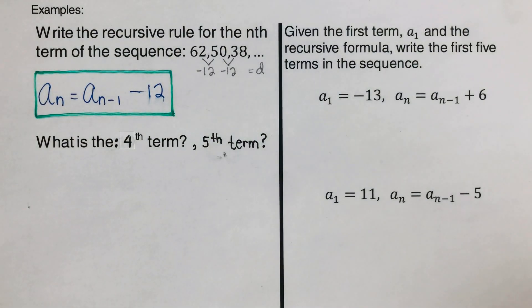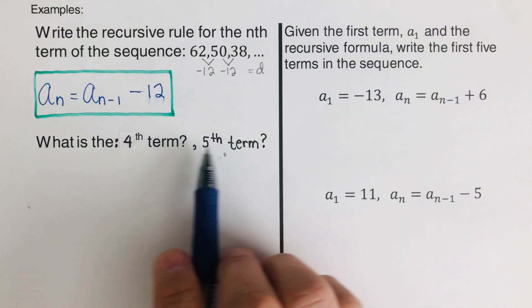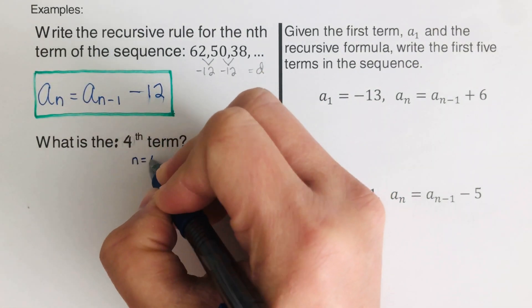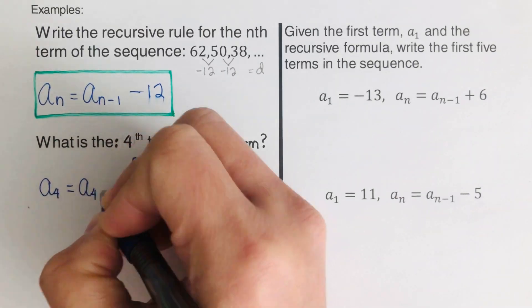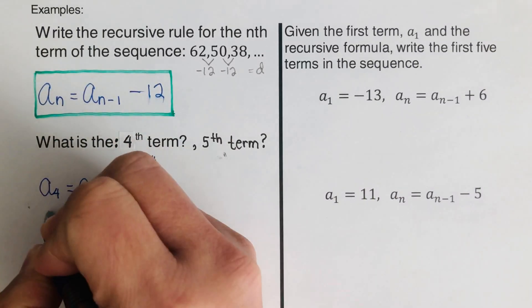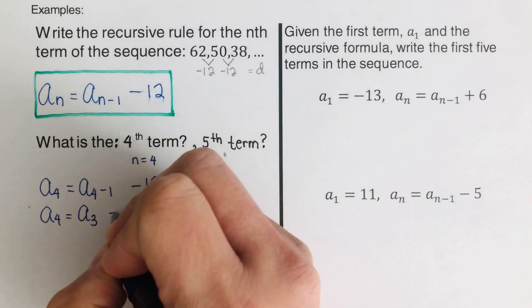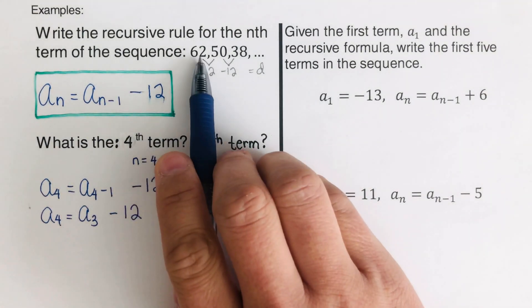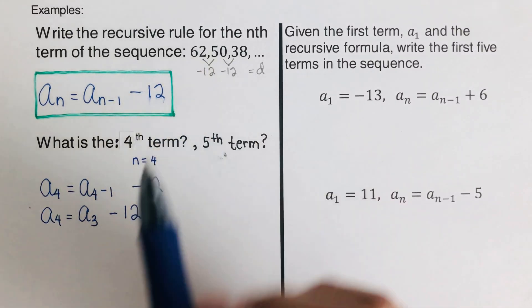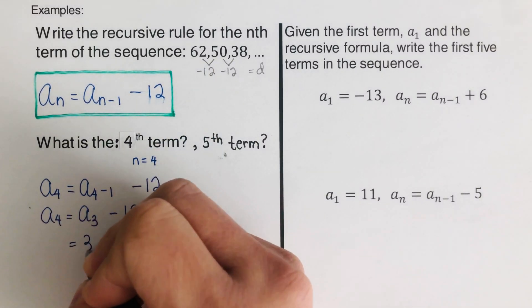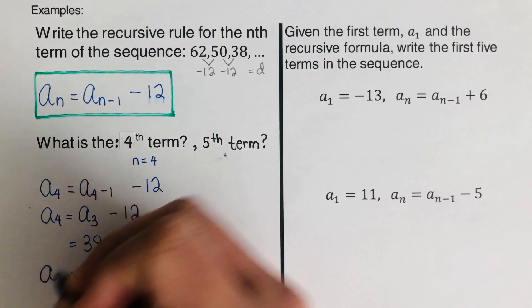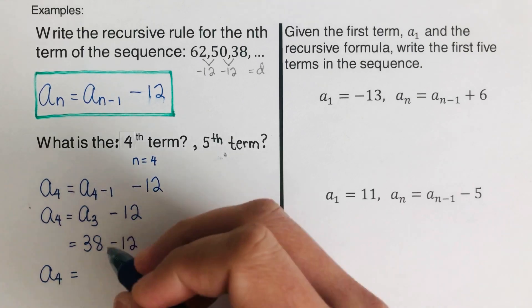This is the recursive rule for this sequence. We are also asked for the fourth term and the fifth term. For the fourth term, we know a sub 3 is the third term — a1, a2, a3 — which is 38. So a sub 4 equals 38 minus 12, which equals 26.